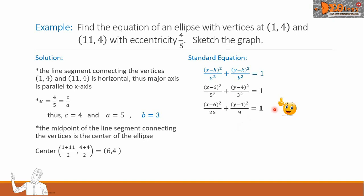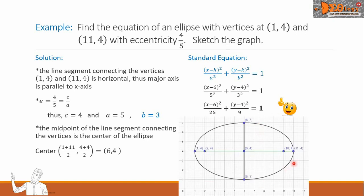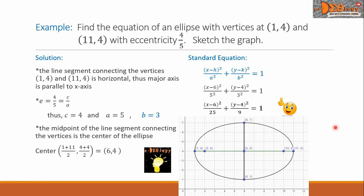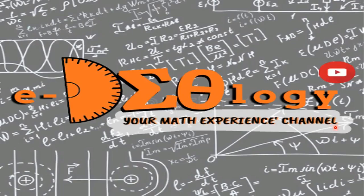Now let us sketch the graph. Here is the ellipse with vertices (1, 4) and (11, 4). The center is at (6, 4). The endpoints of the minor axis are at (6, 7) and (6, 1). The foci are the points (2, 4) and (10, 4). This is our final answer. I hope you learned something from this video. See you again next time.